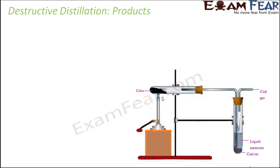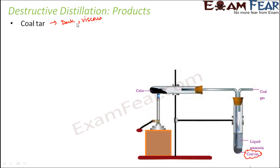As we heat the coal, some colorless vapors are formed. These colorless vapors move through the tubes and reach the vertical tube, where they condense to form a black viscous layer at the bottom. This layer is called coal tar — it is dark, almost black in color, and a viscous liquid.